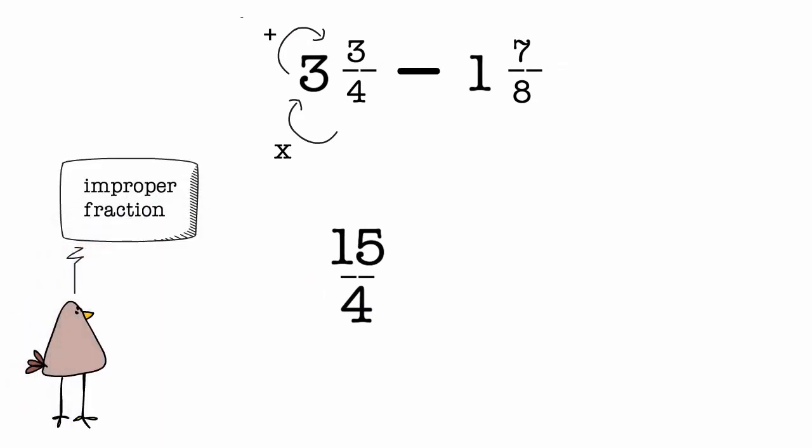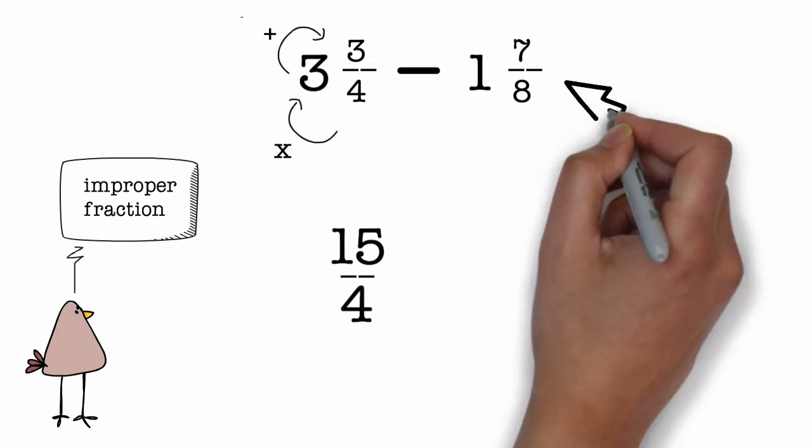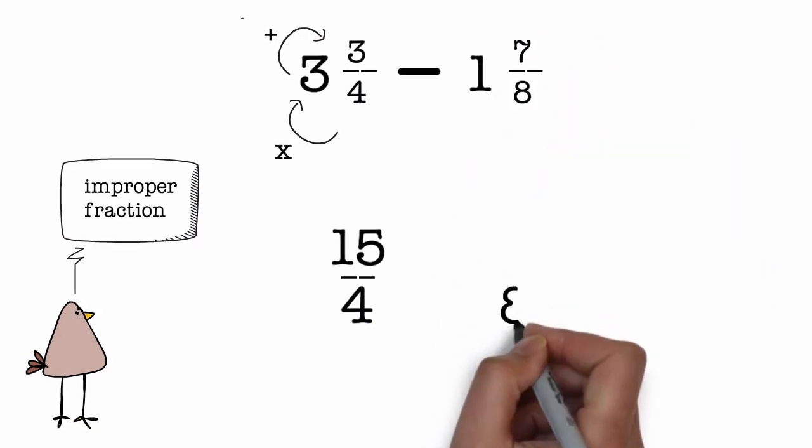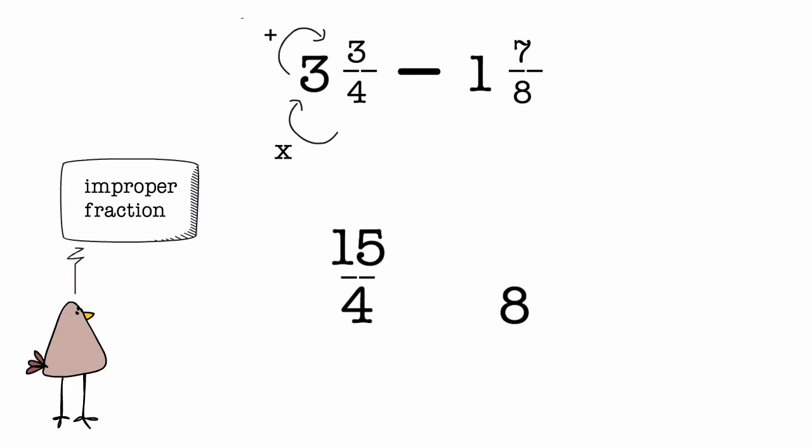Now let's do the same thing here with this mixed number. First we write down the denominator 8. Then moving clockwise to the left we multiply 8 with 1 and that gives us 8, and moving up we add the 7 which gives us 15, and our improper fraction is 15/8.